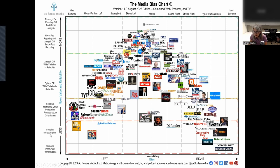Further down in reliability is 'containing misleading information,' and the very bottom is 'contains inaccurate fabricated information.' We can see that AP — Associated Press, a press service that many newspapers and news sources draw on — and Reuters are in the middle of the left-to-right political scale, and they're also up towards the top in the mix of fact reporting and analysis or simple fact reporting. The Pew Research Center does surveys and they're reporting straight from their surveys, so they're doing thorough fact reporting or fact-dense analysis, according to this media bias chart.